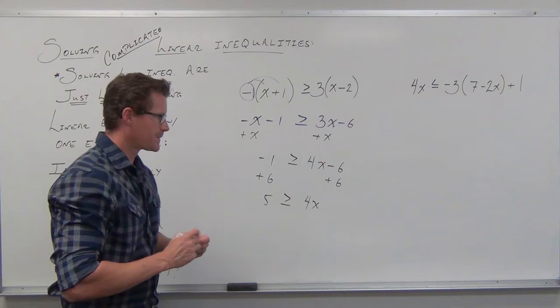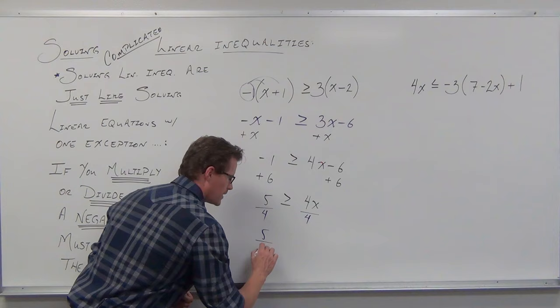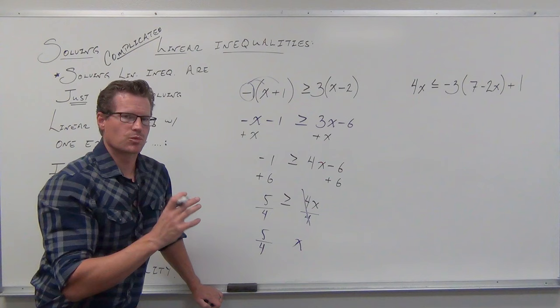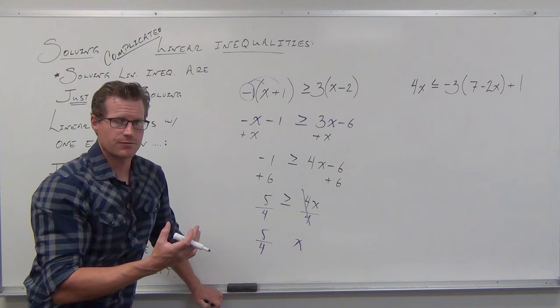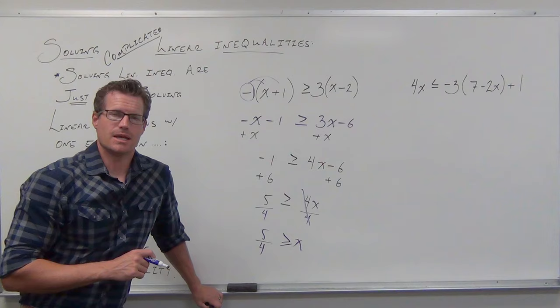Lastly, the last step is always division when we have a coefficient, so we're going to divide both sides by 4. Listen: just because you're dividing doesn't mean you're reversing inequalities — only when you're dividing both sides by a negative. That's the only time you do that. Basically it's in the very last step of your problem when you're solving for your variable. So yes, we divided, but we didn't divide by a negative. That does not reverse inequality.